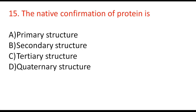Next question: the native conformation of protein is — primary structure, secondary structure, tertiary structure, or quaternary structure? The correct answer is tertiary structure, because protein at normal pH and normal temperature exists in the tertiary structure form.